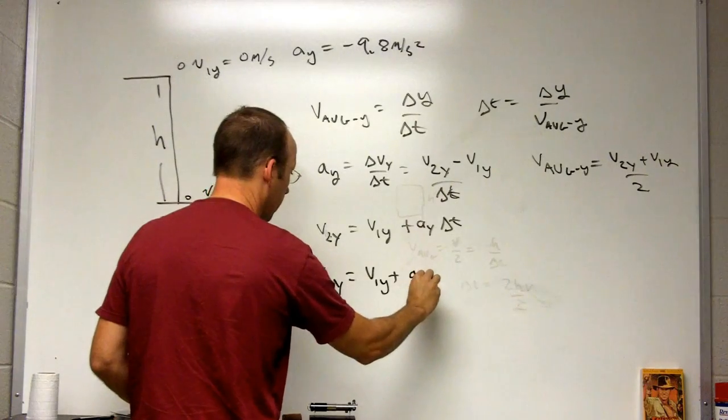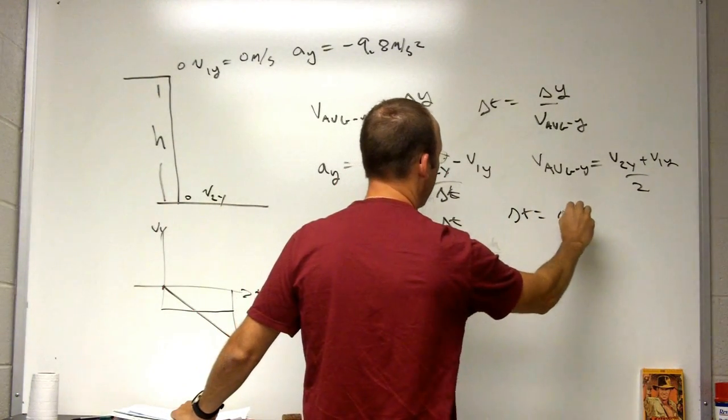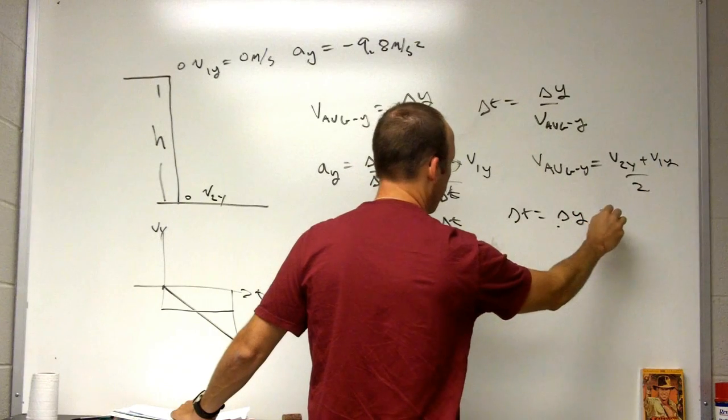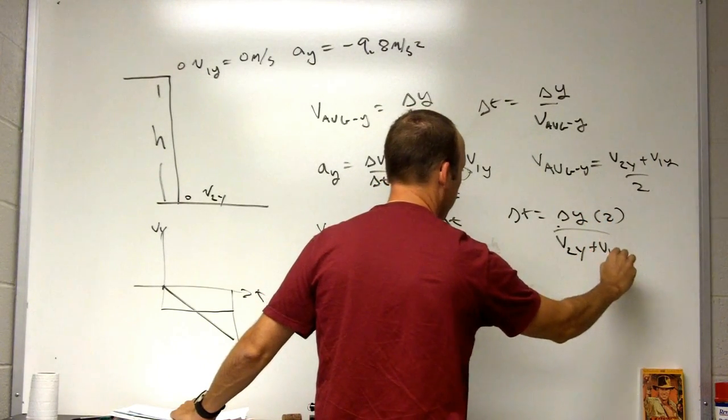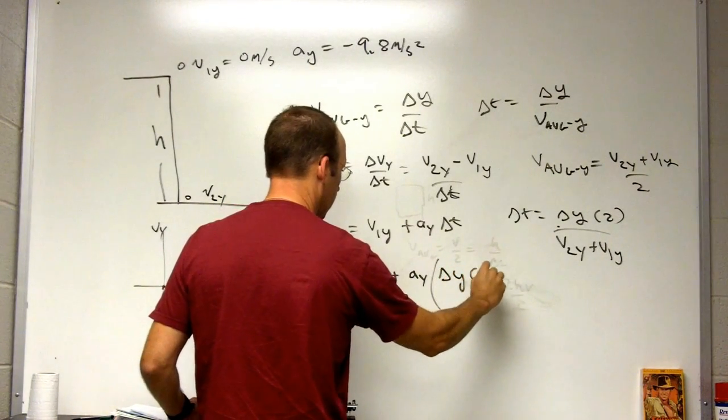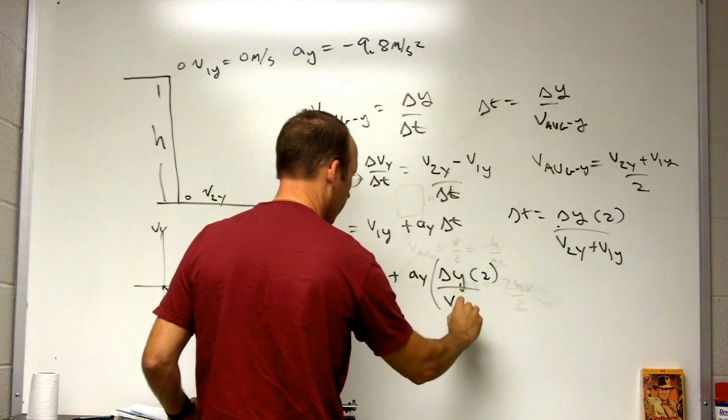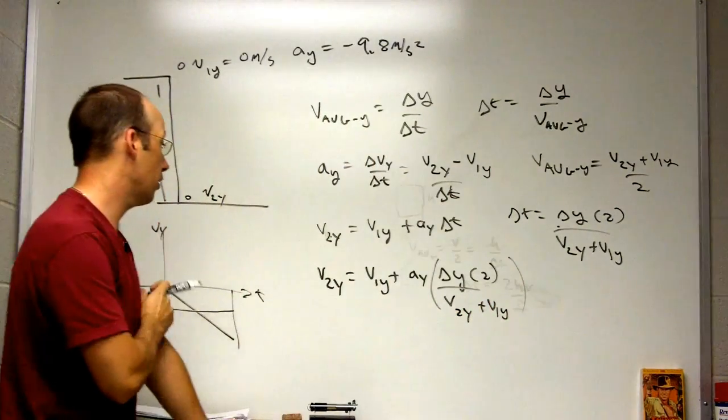And then delta t is going to be delta y times 2 over v2y plus v1y. So that's going to be delta y times 2 over v2y plus v1y. Now one thing that I've done here is I didn't take into account anything about initial conditions yet, so I've derived something more generic.